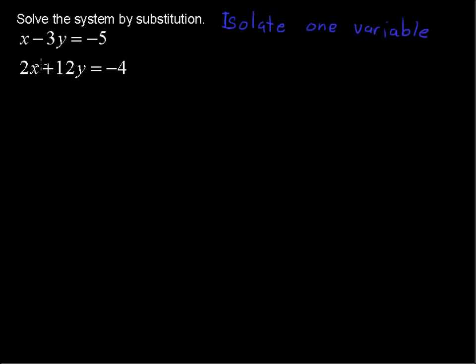So which of these equations looks like it might be easiest to isolate one of the variables? It looks like this first one would be the easiest, and it looks like x would be the one that would be easiest to isolate. Sometimes in the systems it's going to be easier to isolate the y, but in this particular example we'll isolate this x.